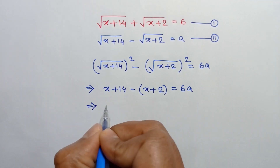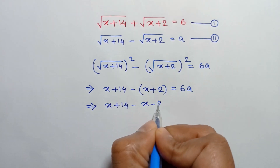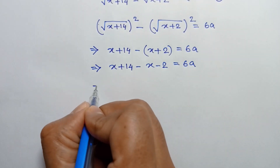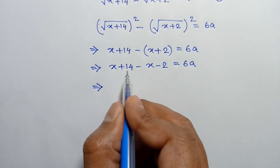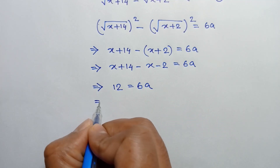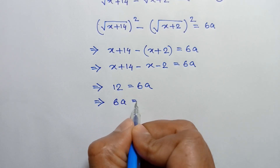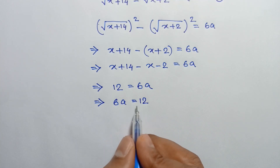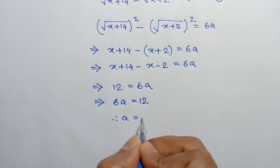So x plus 14 minus x minus 2 is equal to 6a. The x cancels out, leaving 12 equal to 6a. Exchanging sides we can write 6a is equal to 12. Dividing both sides by 6 we get a is equal to 12 divided by 6, which is 2.